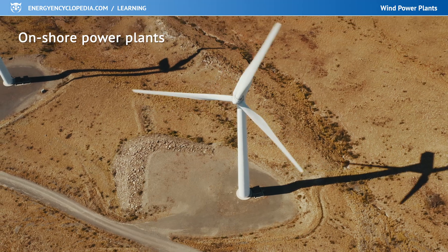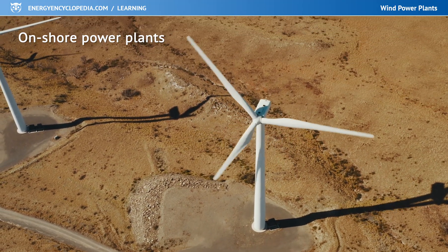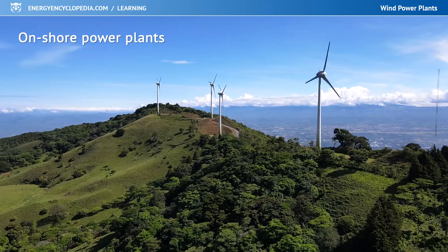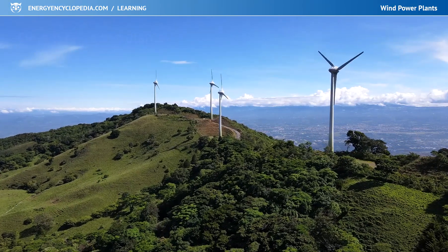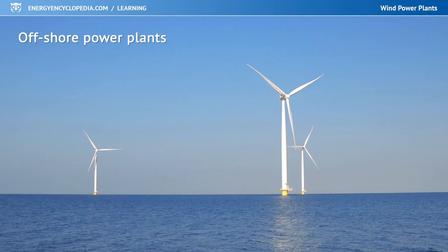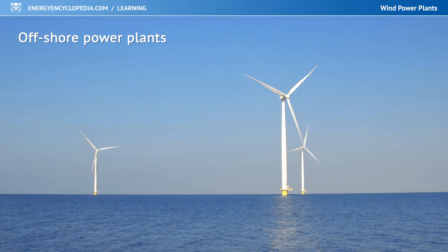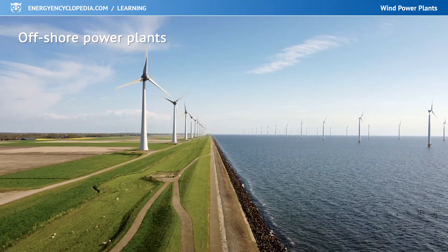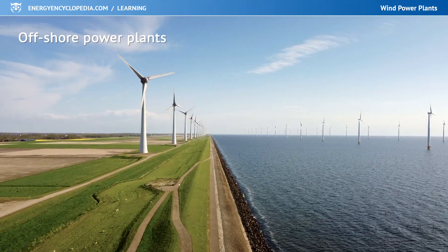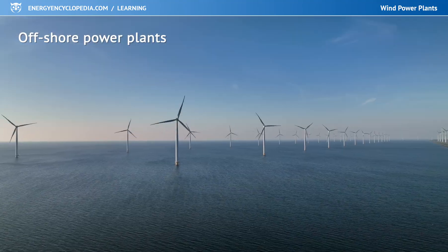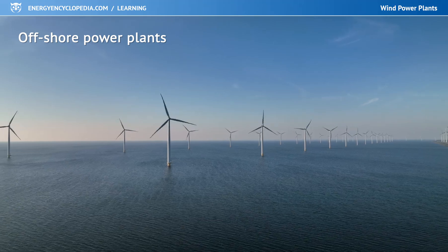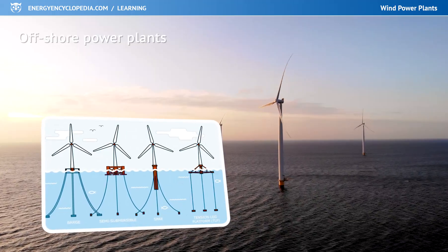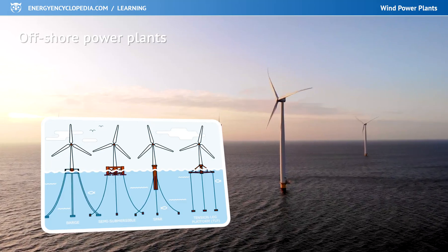Wind turbines are built onshore, often in higher, sparsely populated areas where there is a lot of wind throughout the year. The second option is the currently massively expanding offshore power plants — in other words, built in coastal areas. Here, there is no problem with human settlement, the wind blows most of the year, and many power stations can be built side by side. But they have to be properly anchored to the seabed, and the electricity has to be transmitted through special underwater cables.